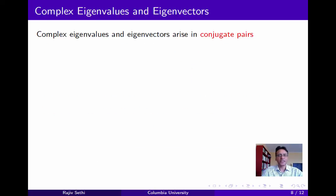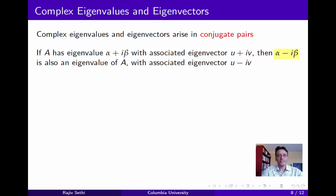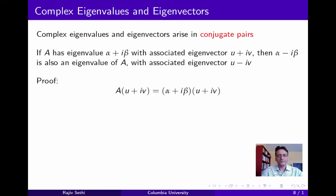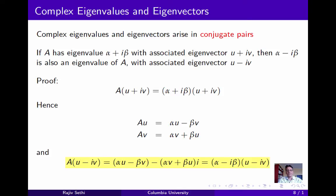Now let's consider complex eigenvalues and eigenvectors. First, these arise in conjugate pairs: if a matrix has eigenvalue alpha plus i beta with associated eigenvector U plus iV, then it must also have eigenvalue alpha minus i beta with associated eigenvector U minus iV, the complex conjugates. To prove this, take A times U plus iV equal to the eigenvalue times U plus iV, equate real and imaginary parts, then use these to form A times U minus iV and collect terms, showing that U minus iV is an eigenvector for A with eigenvalue alpha minus i beta.